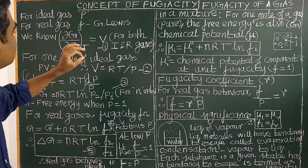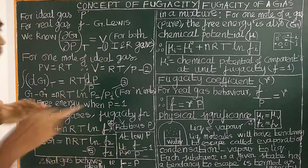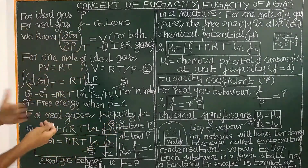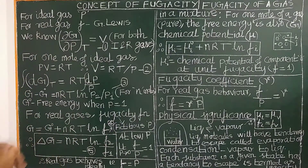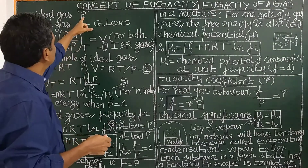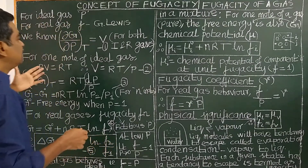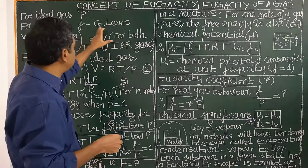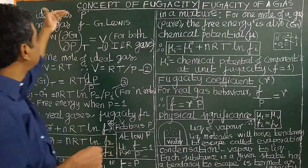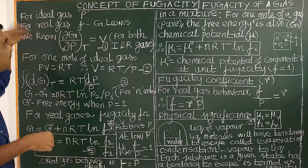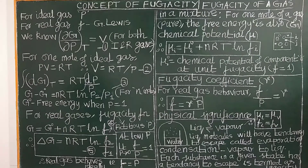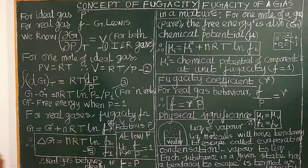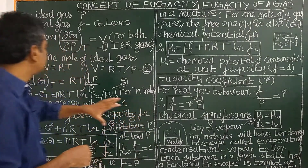For ideal gas, the pressure of a gas is given by P. For real gas, there is a deviation from ideal behavior. Therefore, the pressure term is replaced by fugacity. Fugacity is a function introduced by G. Lewis to represent the pressure of a real gas. For real gases, the fugacity function is used. For ideal gases, the pressure is P.